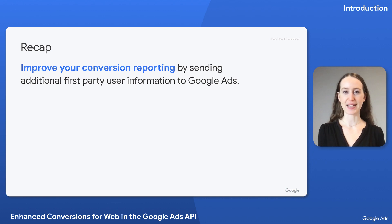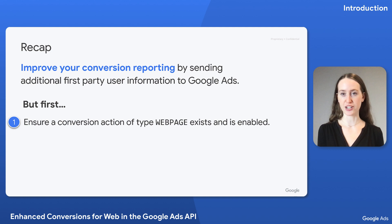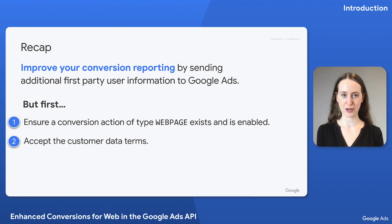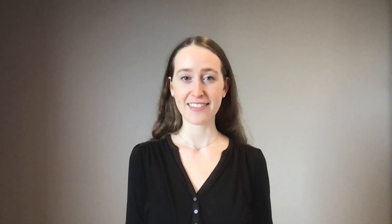Let's recap. Enhanced Conversions for Web in the Google Ads API lets you improve your conversion reporting by sending additional first-party user information to Google Ads. In order for this to work, you must create a conversion action of type web page in your Google Ads conversion customer, accept the customer data terms in your Google Ads conversion customer, and configure tagging on your website for the web page conversion action you created, ensuring it's set up to include an order ID. In later videos, we'll explore the implementation of enhanced conversions for web in more detail. Thanks for watching!